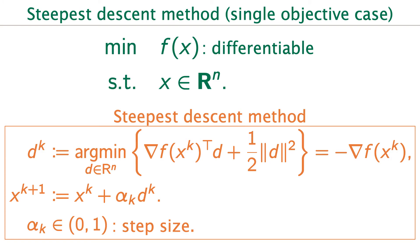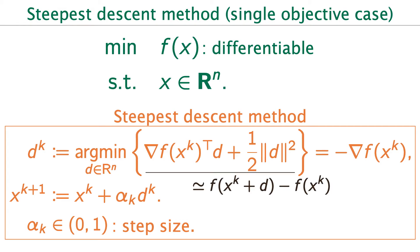Steepest descent method is one of the most major algorithms for differentiable single-objective optimization problems. This algorithm chooses a search direction dk as a gradient descent direction and refreshes xk by using an appropriate step size alpha-k. Note that the subproblem defining dk is minimizing the first-order approximation of f of xk plus d minus f of xk.